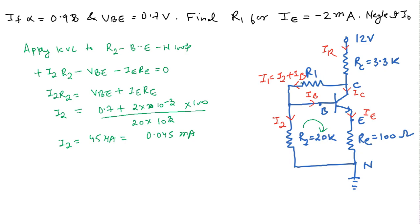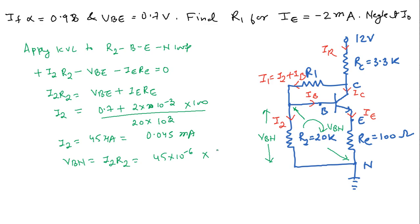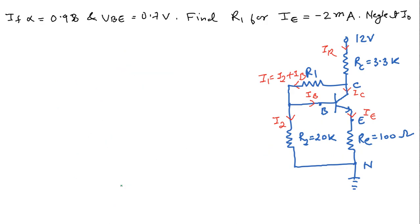To find R1, we need the base-to-ground voltage VBN. VBN is the voltage across R2 only, so VBN equals I2 times R2, which is 45 microampere into 20 kilo ohm. After solving, VBN equals 0.9 volt.